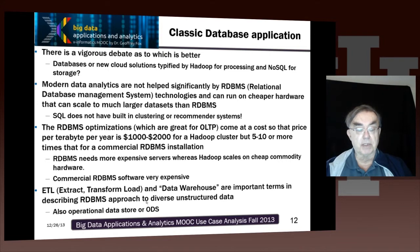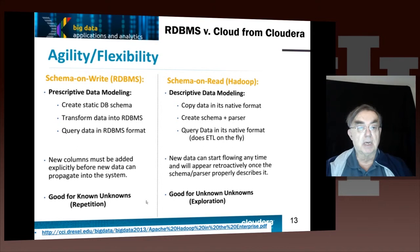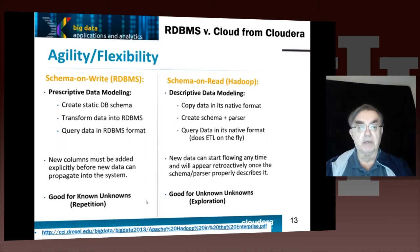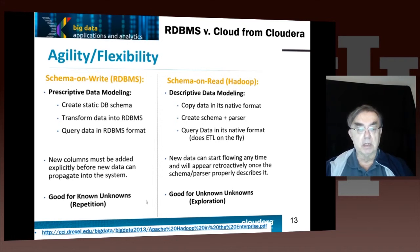We'll also see operational data stores, or ODS. Here's the discussion of schema on write for relational databases versus schema on read, meaning that Hadoop just reads unstructured data and creates structure on top of it. It sounds less efficient, and it is less efficient on some applications, but it scales very easily. The efficiency you lose from predefined indices of relational databases, you gain back from the ability to scale to a large number of nodes on commodity clusters, which are very cheap. In the case of Hadoop, you process the data in its native form and do all transformations after you read it in, which is why you don't have the preprocessing step of ETL.